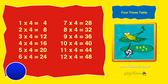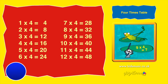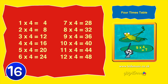One times four is four. Two times four is eight. Three times four is twelve. Four times four is sixteen.